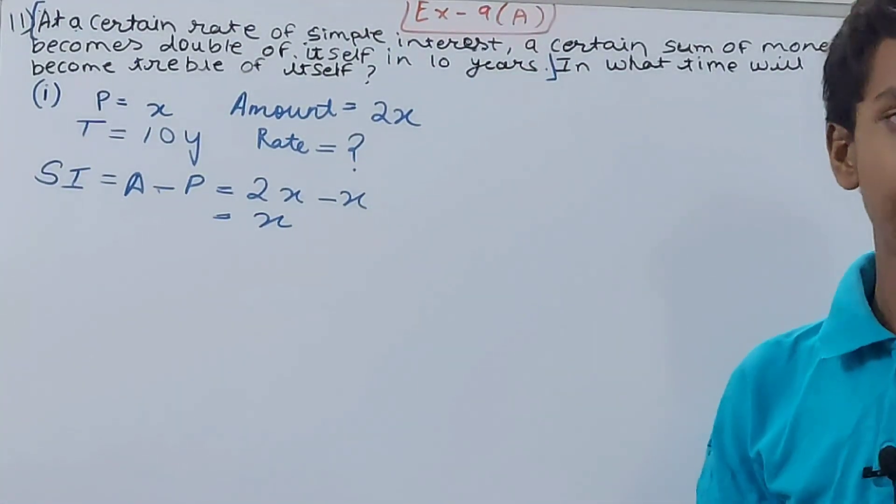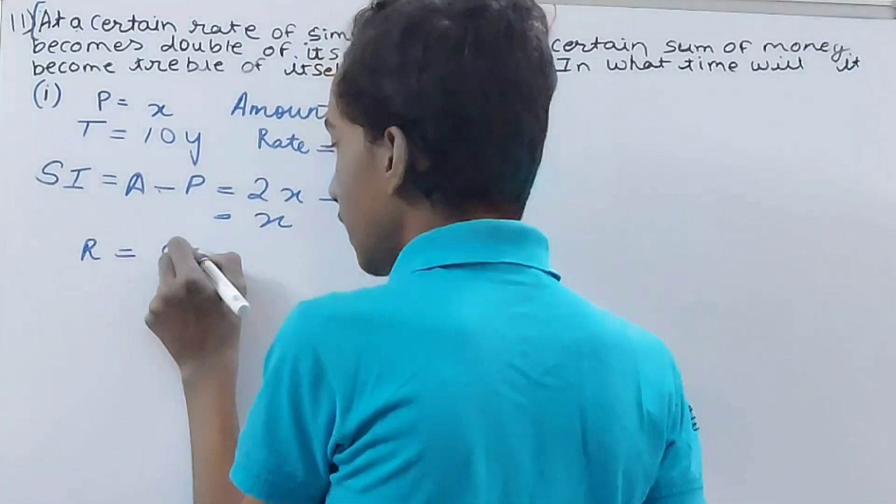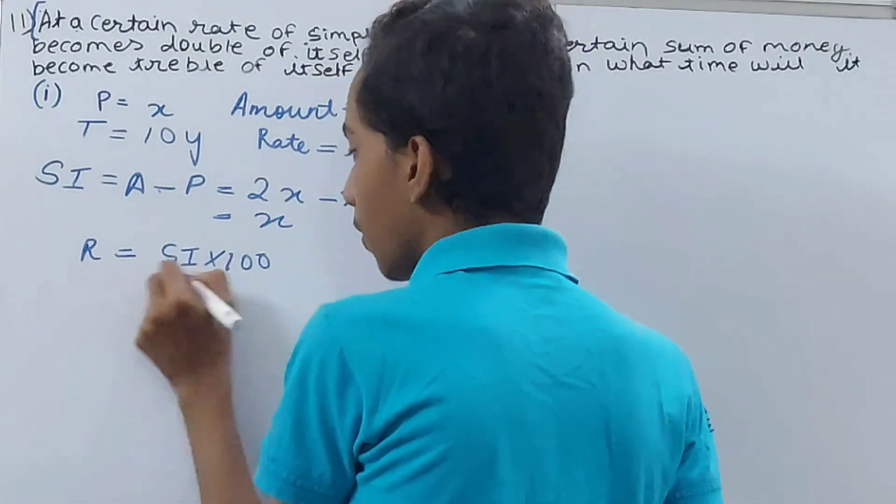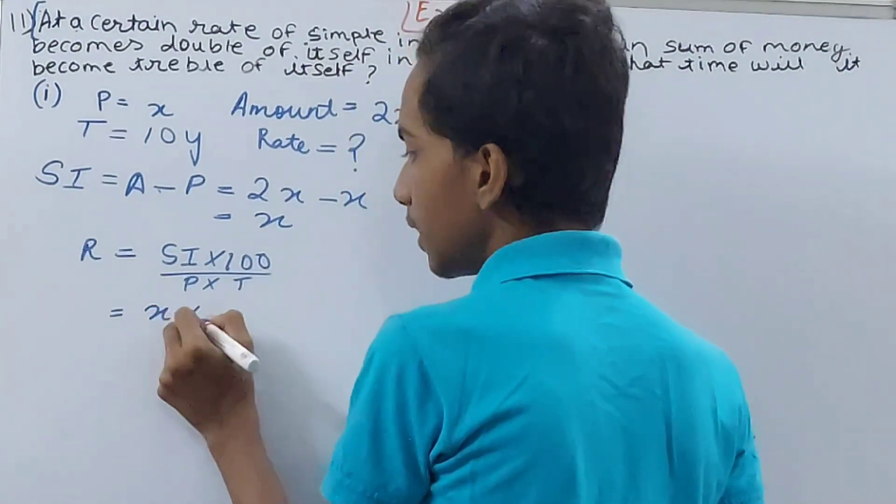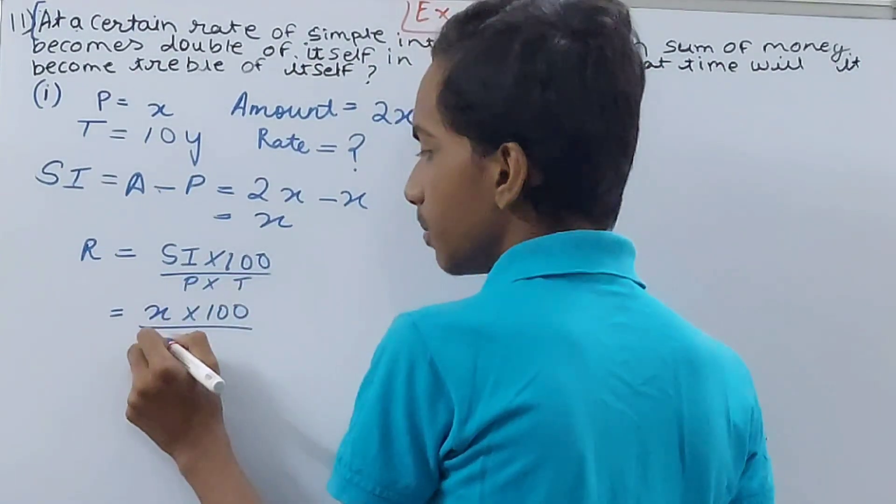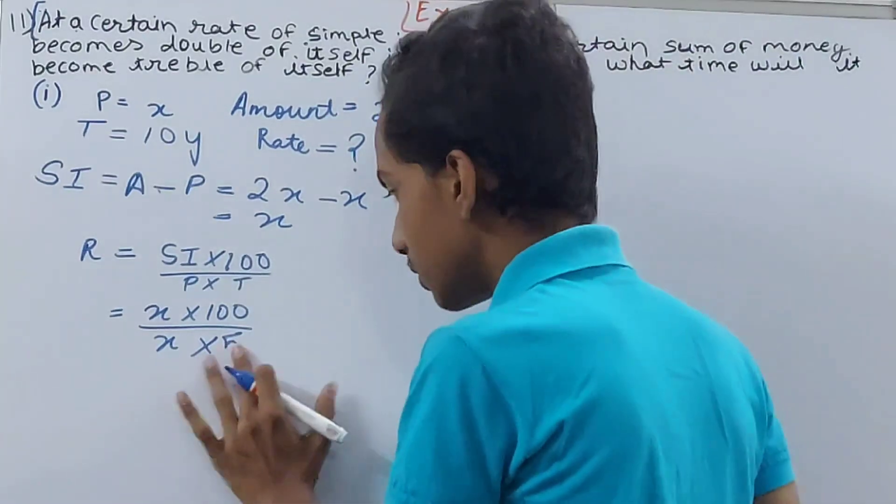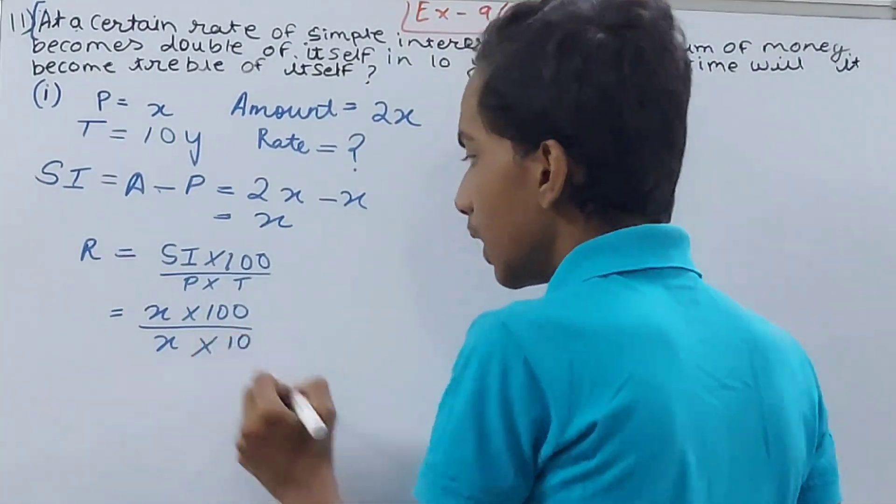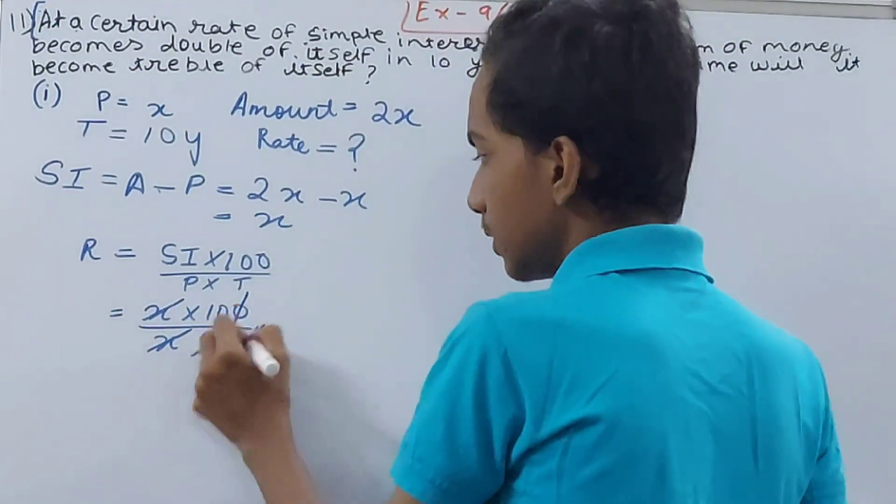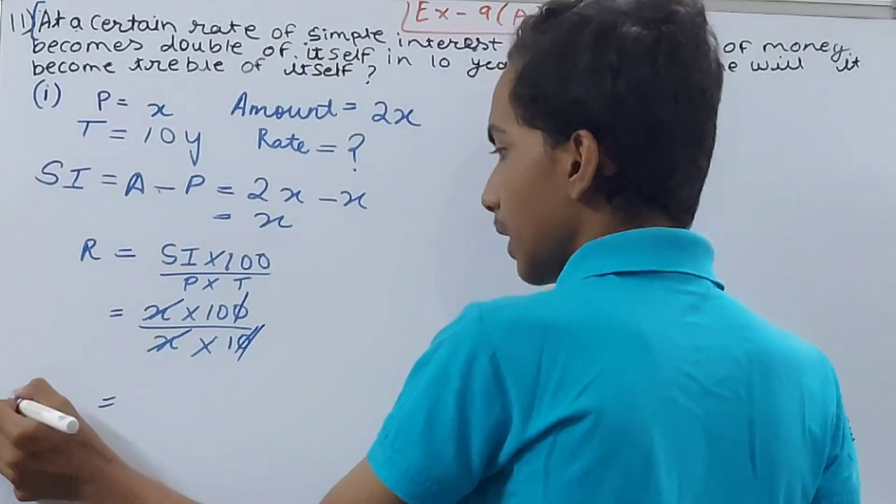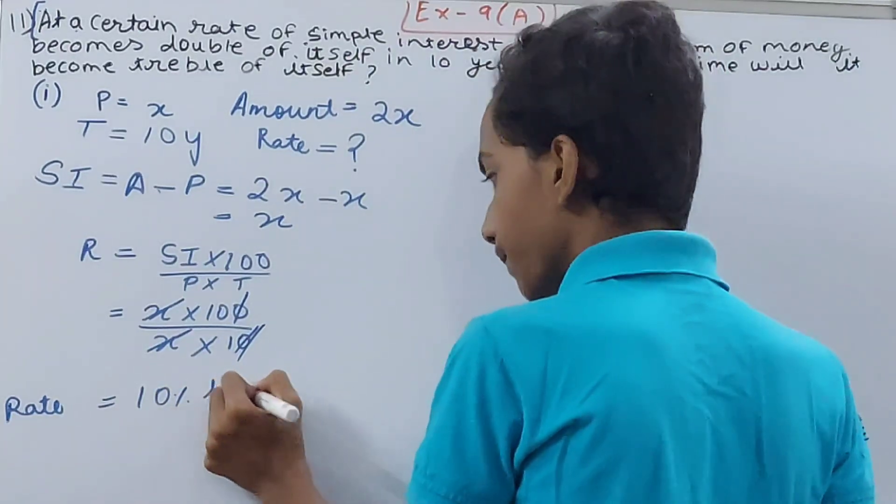Now we use the formula of rate, that is simple interest into 100 upon principle into time. That will be simple interest is x into 100 upon principle is also x into time is 10 years, not 5 years, this is 10 years. Now see here, I'll cancel this x, this x, this zero, this zero canceled. So we are left with the rate as what? 10 percent per annum. So this is the rate.